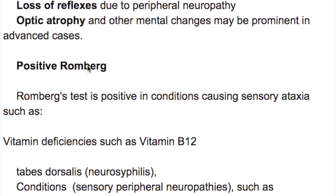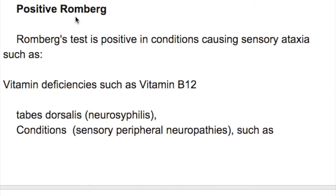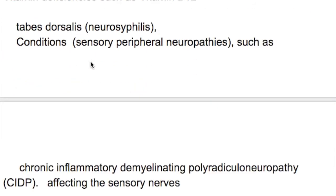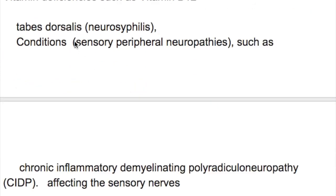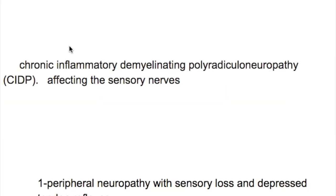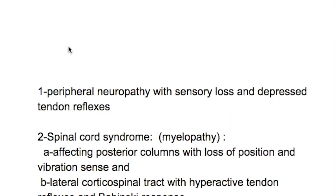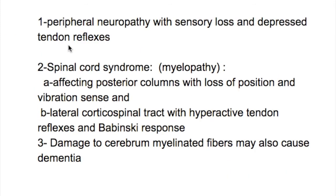The Romberg sign is positive when the patient, while standing, closes their eyes and loses balance. If balance is lost with eyes open, it indicates a cerebellar defect. The Romberg test is positive in sensory conditions such as vitamin B12 deficiency, tabes dorsalis or neurosyphilis, and conditions such as chronic inflammatory demyelinating polyradiculoneuropathy affecting the sensory nerves.